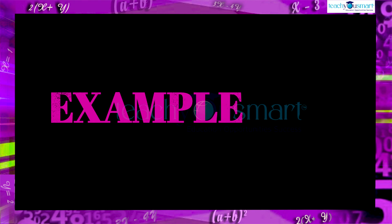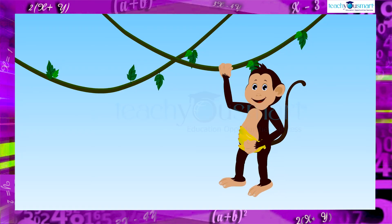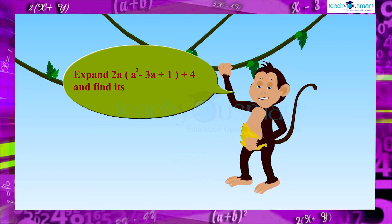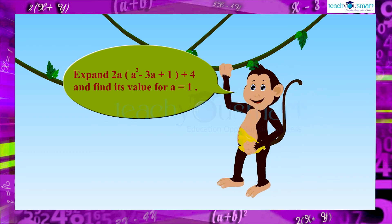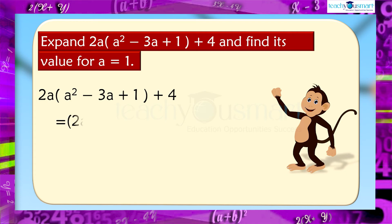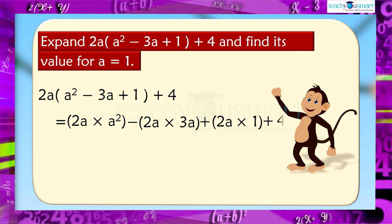Let's take one more example. Expand 2a multiplied by a squared minus 3a plus 1, plus 4, and find its value for a equals 1. The given expression is 2a multiplied by a squared, minus 2a multiplied by 3a, plus 2a multiplied by 1, plus 4, equals 2a cubed minus 6a squared plus 2a plus 4.